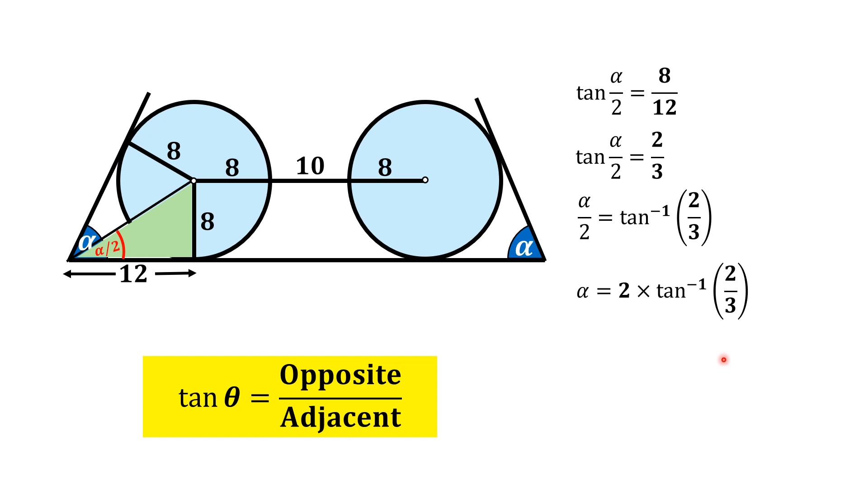And from calculator we know that tangent inverse 2 by 3 is equal to 33.6901, and thus angle alpha will be equal to 67.3802 degrees approximately. That is the answer.